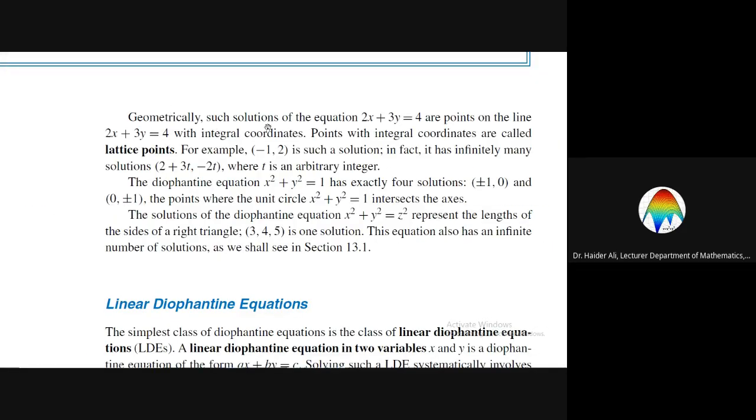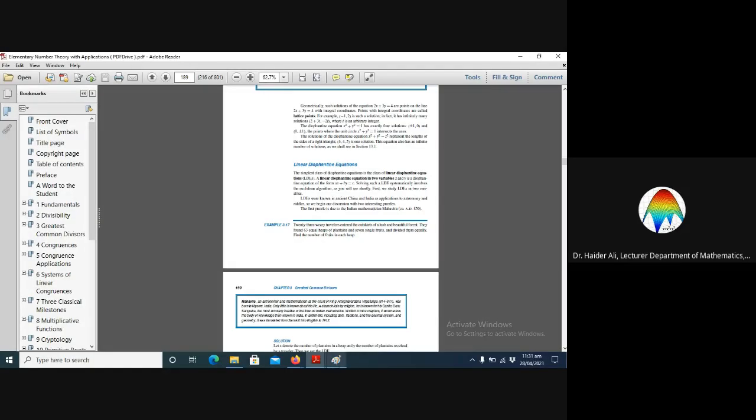Geometrically, such solutions of the equation 2x plus 3y equals 4 are points on the line with integral coordinates. Points with integral coordinates are called lattice points.